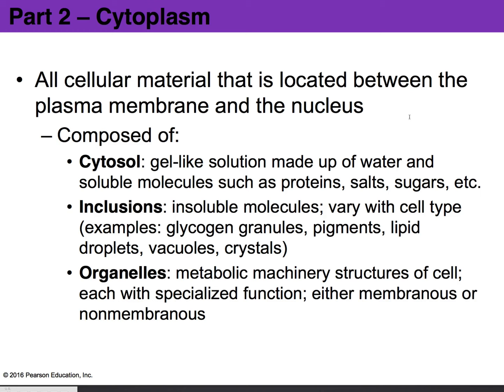We also have certain inclusions — insoluble molecules that vary with the type of cell. For example, in liver cells you might find glycogen granules; in fat cells you might find lipid droplets. Pigments are found in skin cells and hair. Depending on the cell, you'll find various things. Crystals and vacuoles are also found in other types of cells.